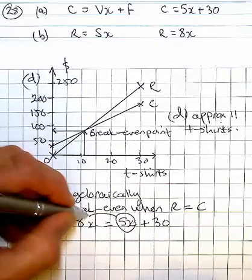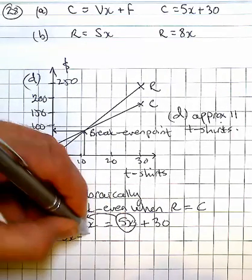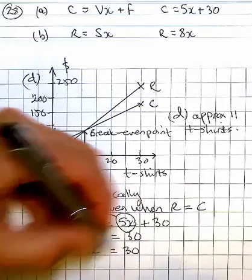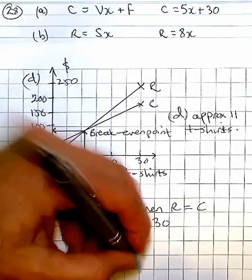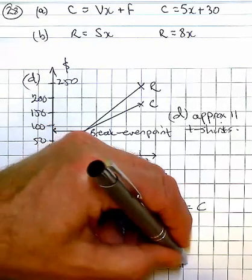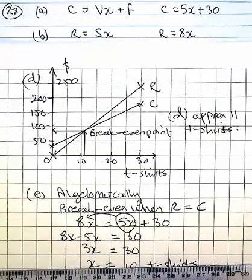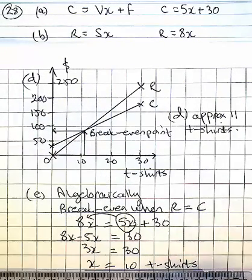Transpose the 5x. So you break even when you have 10 t-shirts being sold.